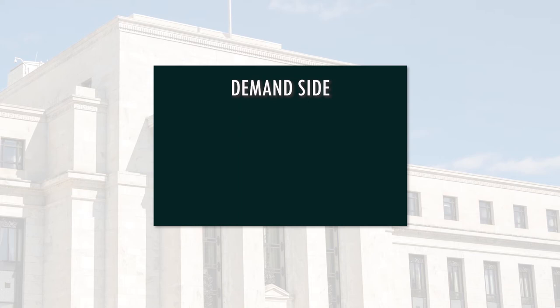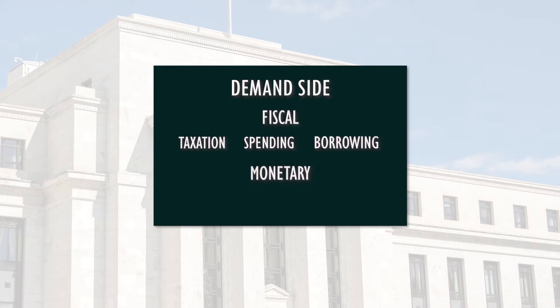On the demand-side, we have fiscal and monetary policy. While fiscal policy uses taxation, public spending, or borrowing to achieve changes in aggregate demand, monetary policy attempts to influence aggregate demand through the regulation of the supply or the demand for money. In a modern economy, fiscal policy is the responsibility of government, while monetary policy is the responsibility of the central bank.